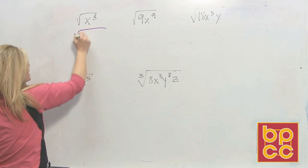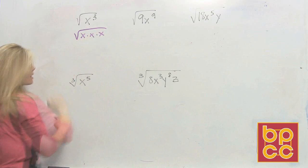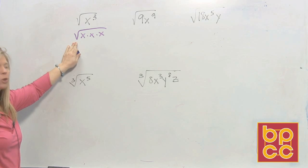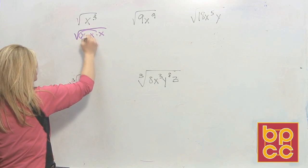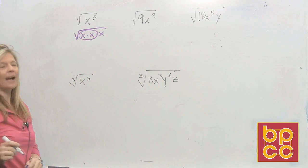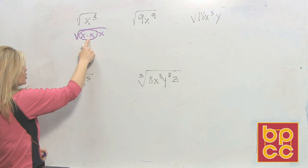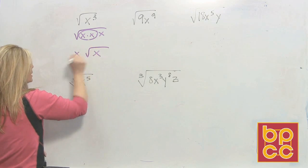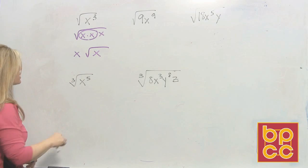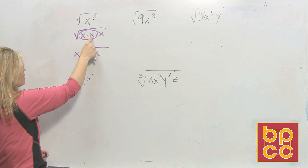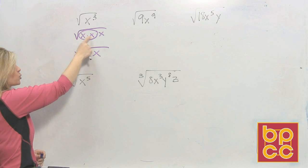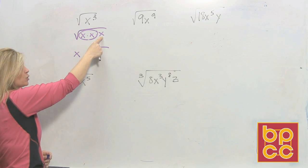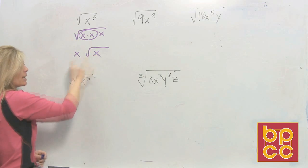x cubed means x times x times x. Square root means making groups of 2 — multiplying the same thing. If you look at x cubed, you get one group of 2, and then you have 1 left over. So you'd say there's a group of 2: this is x times x, which is x squared. What is the square root of x squared? x. This last x doesn't have anybody to group with, so he can't square root — he stays inside.